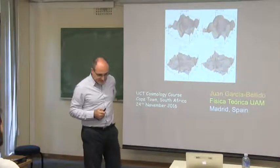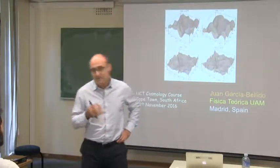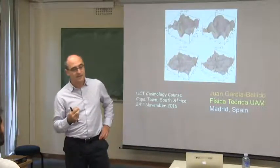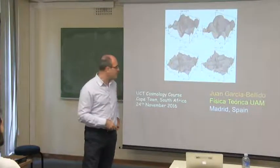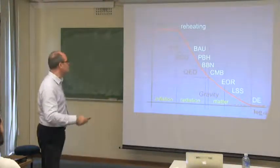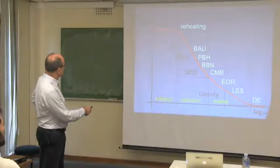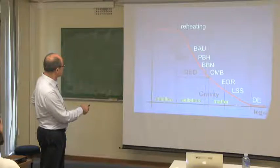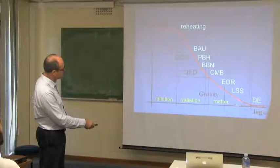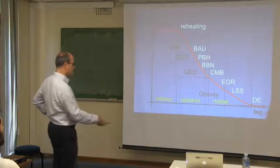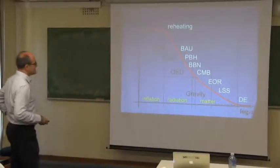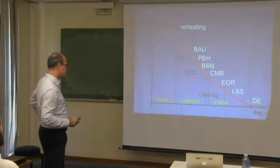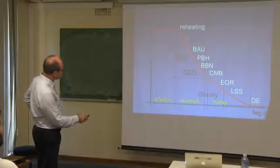Preheating is a phenomenon which we think occurs right at the end of inflation when the state of inflation ends. We have there the conversion of energy from inflation to radiation and matter eras. Immediately after inflation, which is a stage in which the energy density is approximately constant, we enter some kind of sphere of the universe, and in the meantime there are a lot of phenomena.